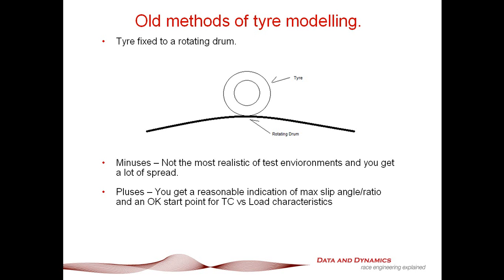To get going, these aren't too bad. Avon used to use this approach for their tyre test data back in the late 90s, and I used that to relatively good effect when doing preliminary ChassisSim models of F3 and Formula 3000 cars using ChassisSim versions 1 and 2.0. They're not perfect, but it gets you up and running — and in this business, that's always a start.